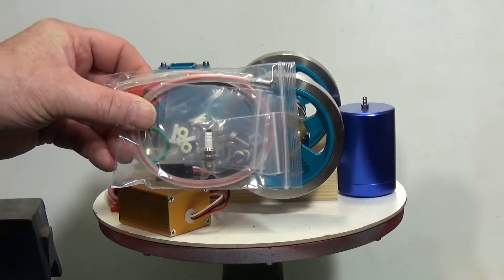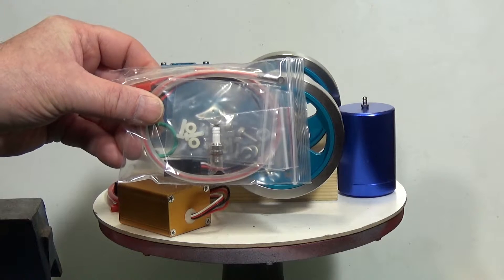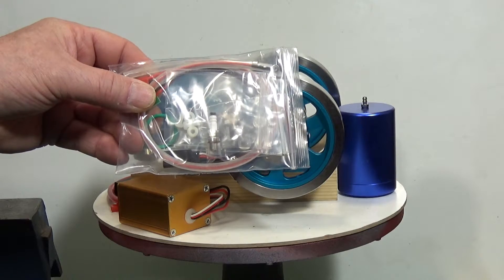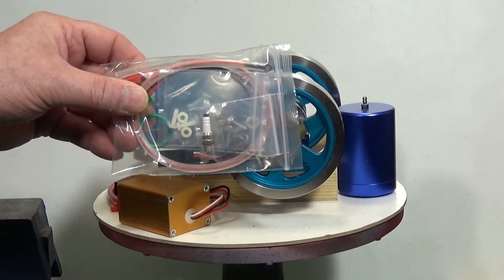There's a spare hall effect sensor in there and you've got the spark plug, spare nuts and bolts. And also there's a fuel tube and various cables. So that's quite good.